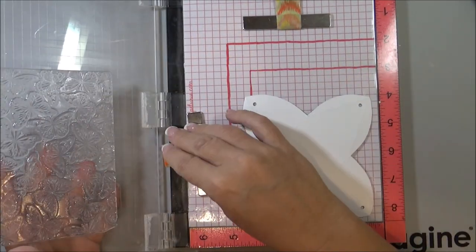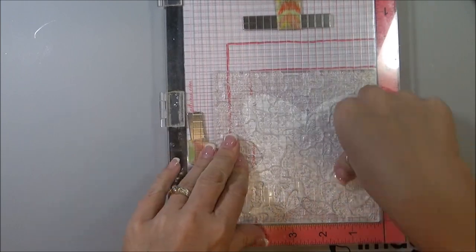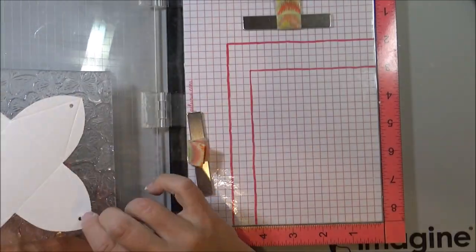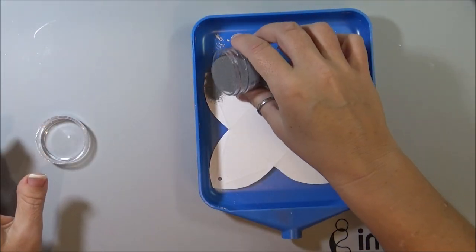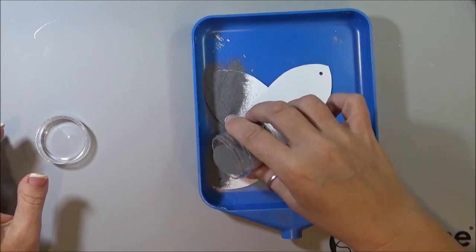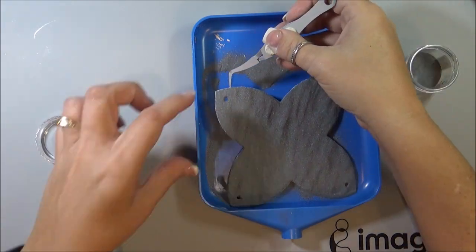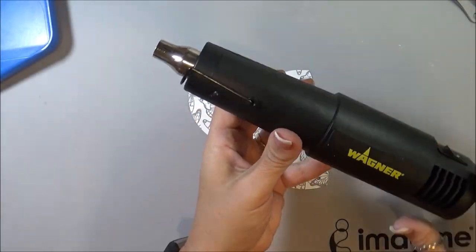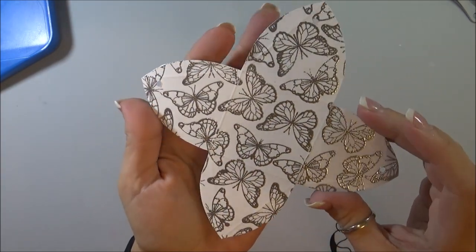And then with the Poppy Stamps stamp, I'm just going to press that down. And then I'm just going to pour silver embossing powder right over the top of that. Then I'm just going to heat set that real fast. Looks like all embossed.